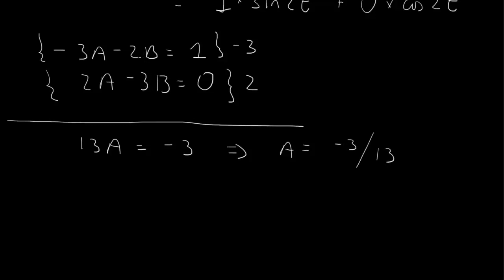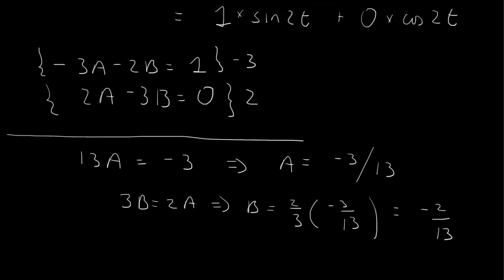And then we can solve the second equation for b. So we have 3b equals 2a, or b is equal to 2/3 times a, which is minus 3 over 13. So that gives us the 3's cancel, so we have minus 2 over 13. So we have a and b.